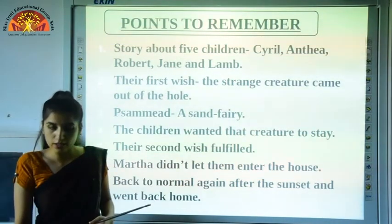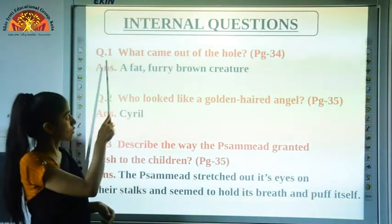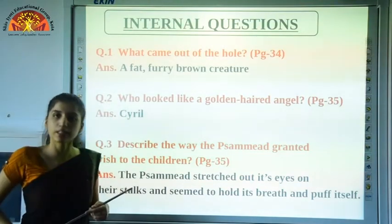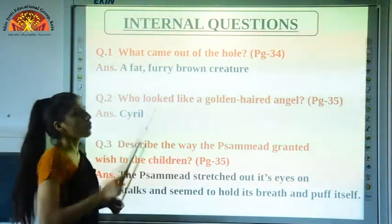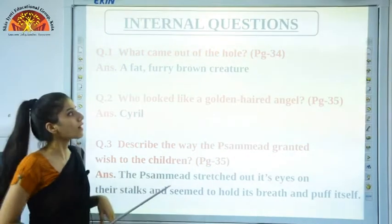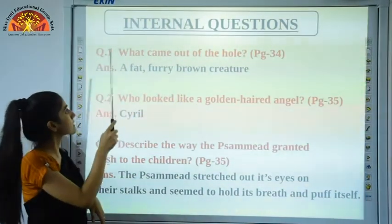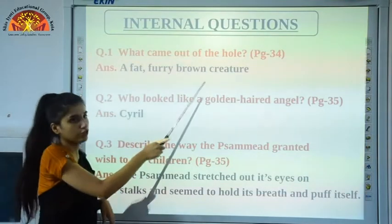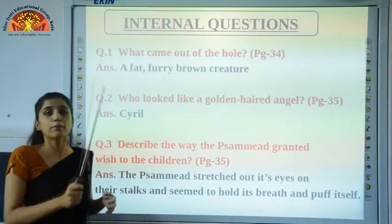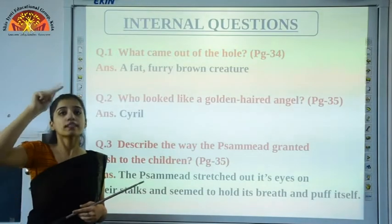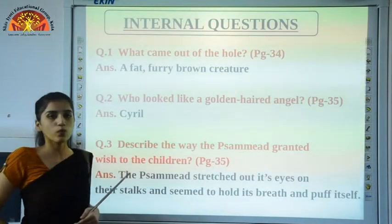Now we are going to mark the internal questions of this chapter. The first question you can mark on page number 34: What came out of the hole? The answer is a fat furry brown creature. This is on the second line from the top — you can mark this answer over there.